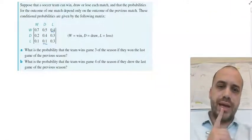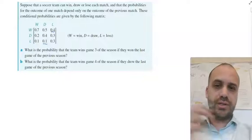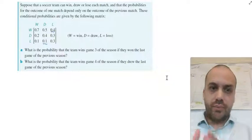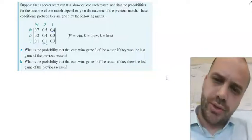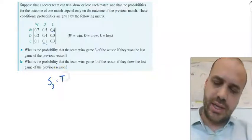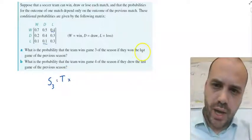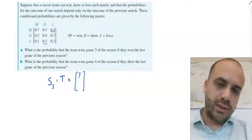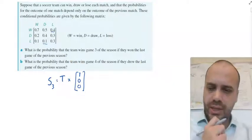So the question is, what is the probability that the team wins game 3 of the season if they won the last game of the previous season? Bit of a trick question here. We have to be really careful when we do our counting here that we raise to the correct power. So we want to know the third game of the season. We know what our transition matrix is here, T. And we know the initial state matrix. They won the last game of their season. So the initial state matrix would be they won the last match. They didn't draw it. They didn't lose it. We know exactly what happened on that last game.